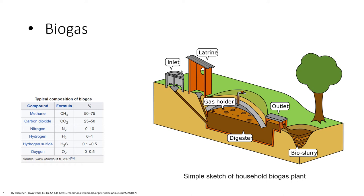Biogas is produced by microorganisms such as methanogens and sulfur-reducing bacteria performing anaerobic respiration. Biogas can refer to gas produced naturally or industrially. It is produced naturally in marshlands and artificially by biogas plants and in industries.